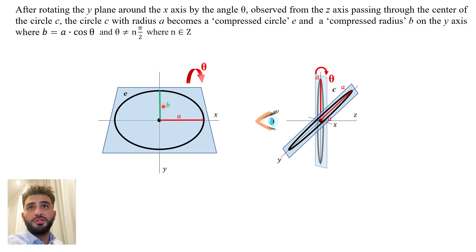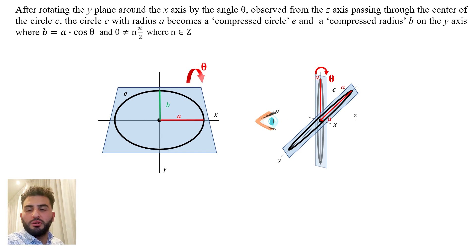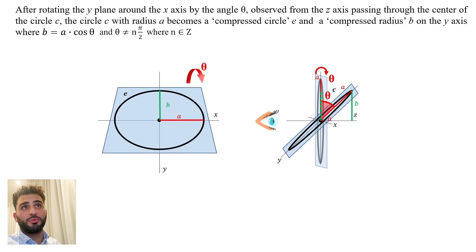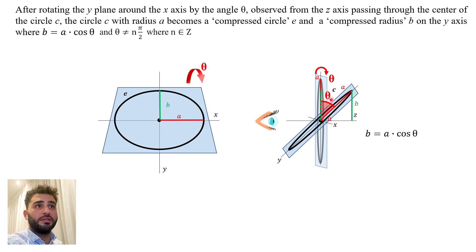We see that the radius A that was on the y-plane became shorter — a compressed radius, if I can call it that. Let's call it compressed radius with a length B. This length B is actually the distance between the x-axis and the height reached by the circle after rotating it with the angle theta. If you want to find the distance B, by translating the segment against the old radius A, this can be found by the cosine theta. So the ratio between B and A is cosine theta, meaning B is equal to A times cosine theta.